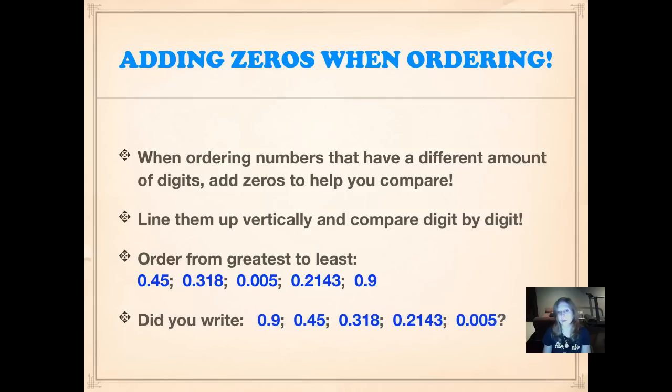Did you write nine tenths was the greatest number? Forty-five hundredths came next. Three hundred eighteen thousandths was the next greatest number. Two thousand one hundred forty-three ten thousandths came next. And five thousandths was the least number up there or the lowest number up there. If we're numbering from greatest to least, remember, the winner is the person who has the lowest number. So whoever ran that mile in five thousandths of a second or a minute is the winner. Now that probably wouldn't happen in real life unless you're Dash from the Incredibles.